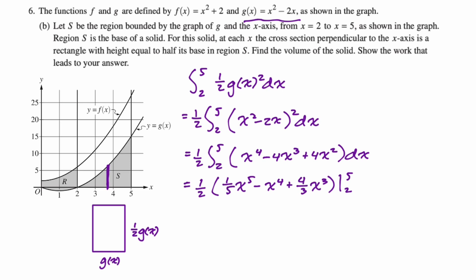We need to evaluate this at two and at five. So five first, then two. What I'm going to do is we're just subbing in one half quantity. We're going to plug in five, so we get 5⁵/5 - 5⁴ + 4/3·5³.